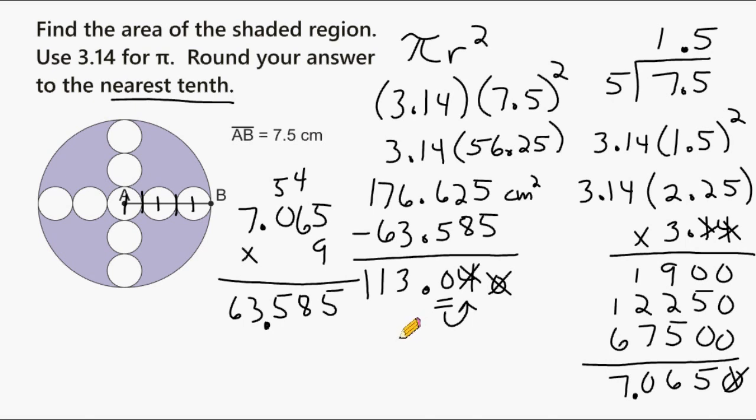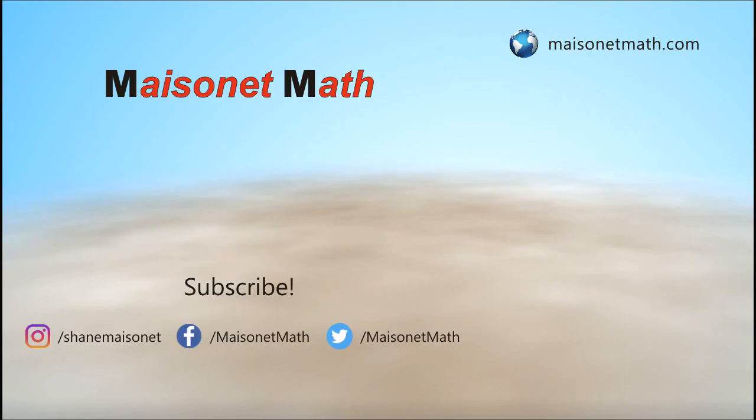So we would say that the area of the shaded region is approximately equal to 113 square centimeters. And thank you.